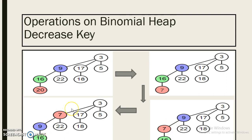But 7 is larger than 3, so now this state of heap is satisfying minimum heap property, so the procedure will stop here. This operation is known as decrease key operation.